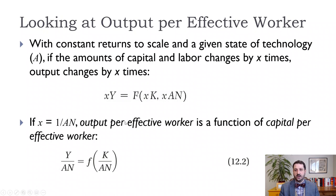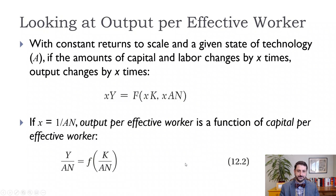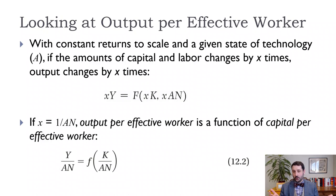We still have constant returns to scale. So if we increase capital and effective labor by the same amount x, then output will increase by x. If x equals 1 over AN, then we can write our output per effective worker as some function of capital per effective worker. This is very similar to what we had in Chapter 11, except instead of y over N and k over N, now we have y over AN and k over AN. We're going to assume some growth rate in A, and therefore output per worker will grow by that amount and capital per worker will grow by that amount. But capital per effective worker and output per effective worker will be constant in the steady state.